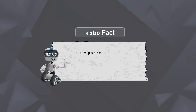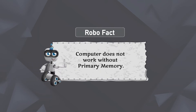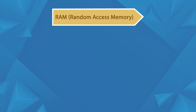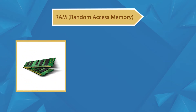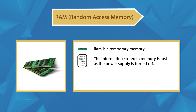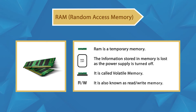Robo Fact: A computer cannot work without primary memory. Random Access Memory, RAM, is a temporary memory. When the computer is closed, the information stored in this memory from the power supply is lost. This is a volatile memory. This is a read-write memory.